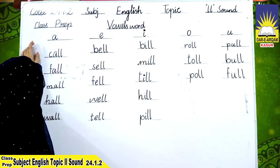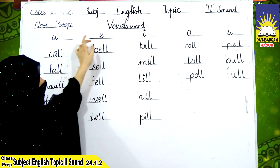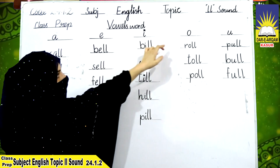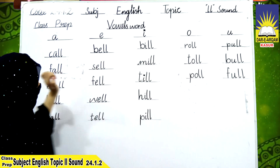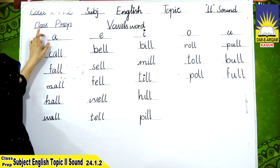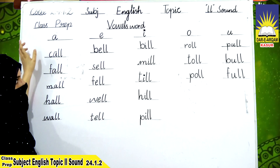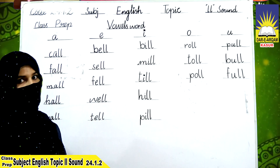Now, vowel words: A, E, I, O, U. These A letters attach with the LL sound.